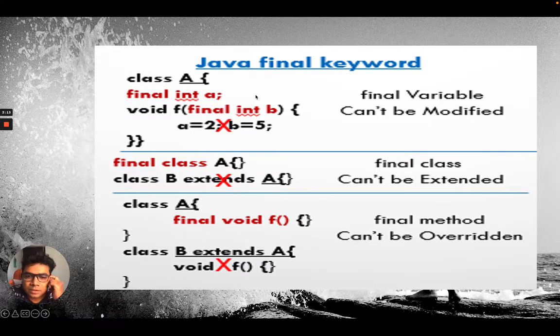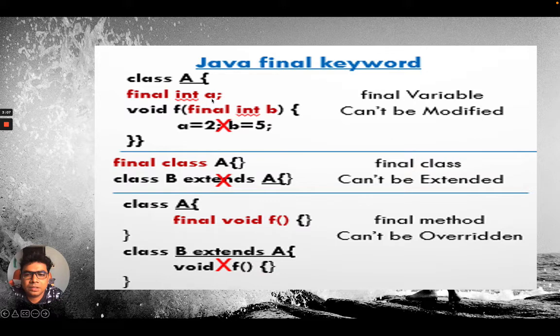So you cannot override a method if it is final in the base class. So final keyword in this example, a coding sample example, you can see if we use this variable, you cannot reassign it. So here you can see finally in a, if we'll try to change the value of a, it cannot be done. It will give you a compiler error. Similarly, if we have a class final class a, if class b try to extend class a, that will give you compiler error, because final class cannot be extended.